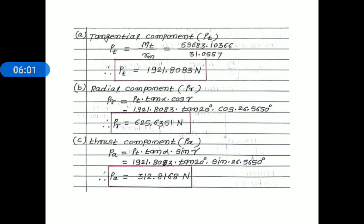Now let us find the components of the resultant tooth force acting on the pinion. The first component is the tangential component P sub t. P sub t equals M sub xt divided by R sub m. Substituting: 59,683.10366 divided by 31.0557. After simplification, tangential component P sub t equals 1921.8083 newtons.